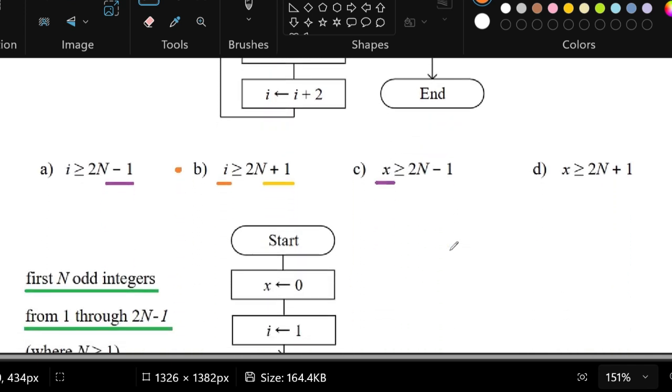If we look at the answer group next, we can see that there are patterns that we can observe but also differences to distinguish between the choices.